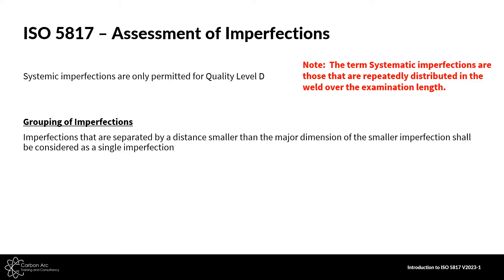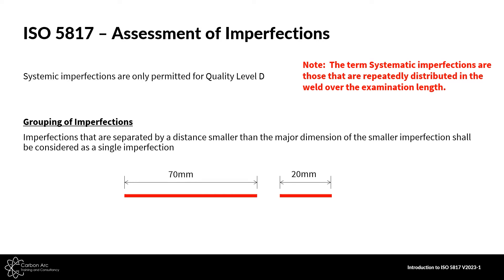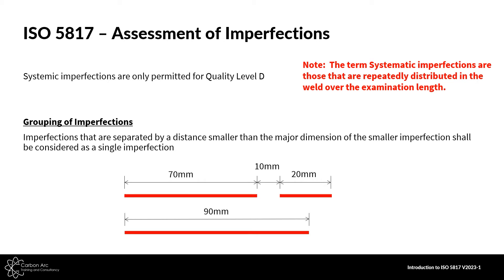We also have to group imperfections in a certain way. Imperfections separated by a distance smaller than the major dimension of the smaller imperfection shall be considered as a single imperfection. For example, if we have a lack of sidewall fusion at 70mm and 20mm with a gap of 10mm between them — 10mm is smaller than the smallest imperfection of 20mm — so we group them as a single imperfection of 90mm total. That may move something from an accept to a reject in certain circumstances.